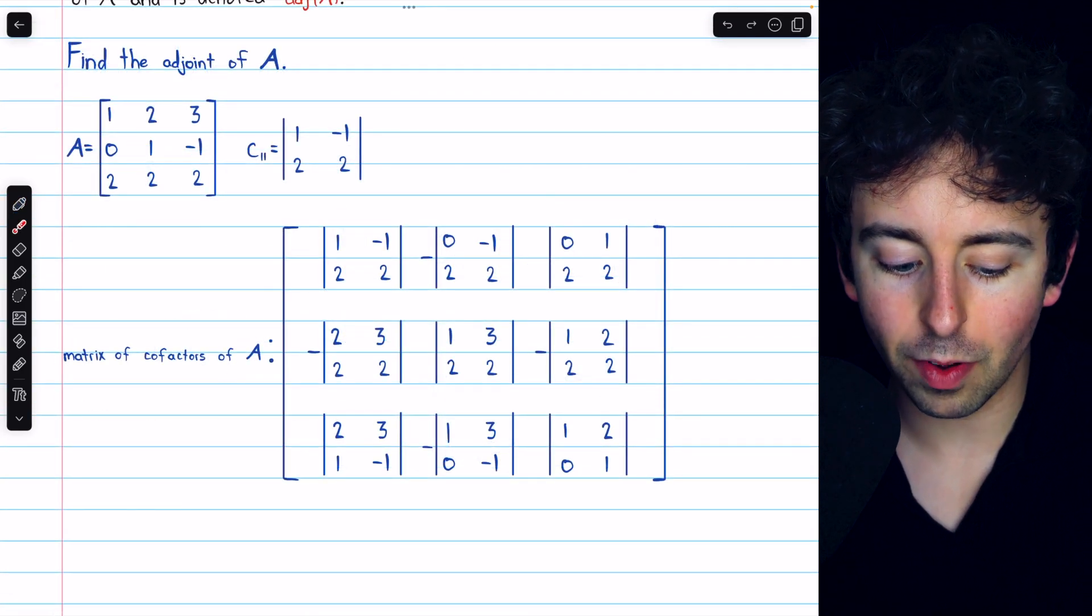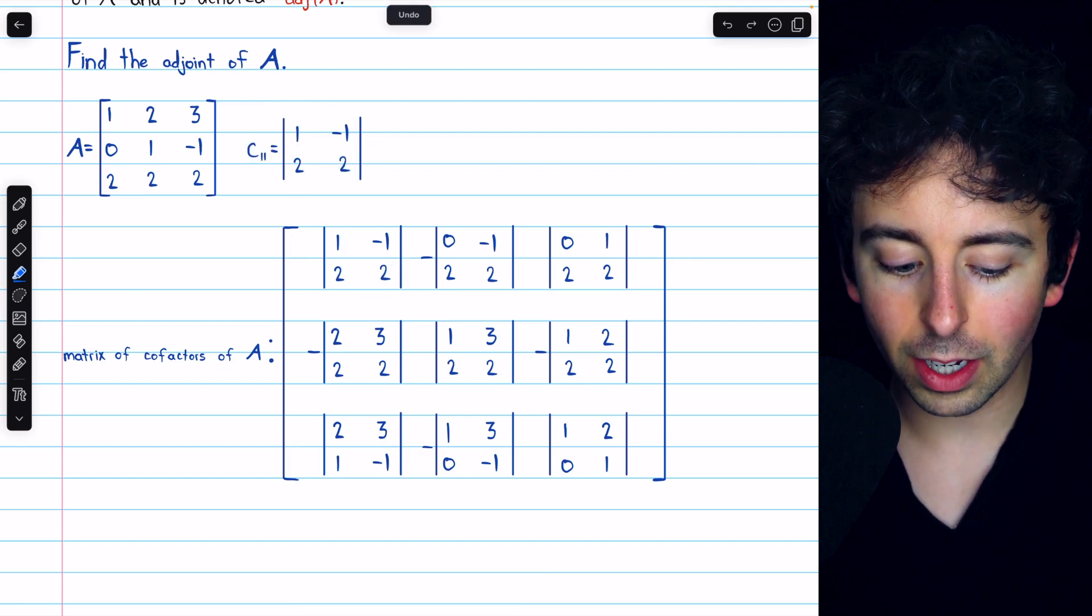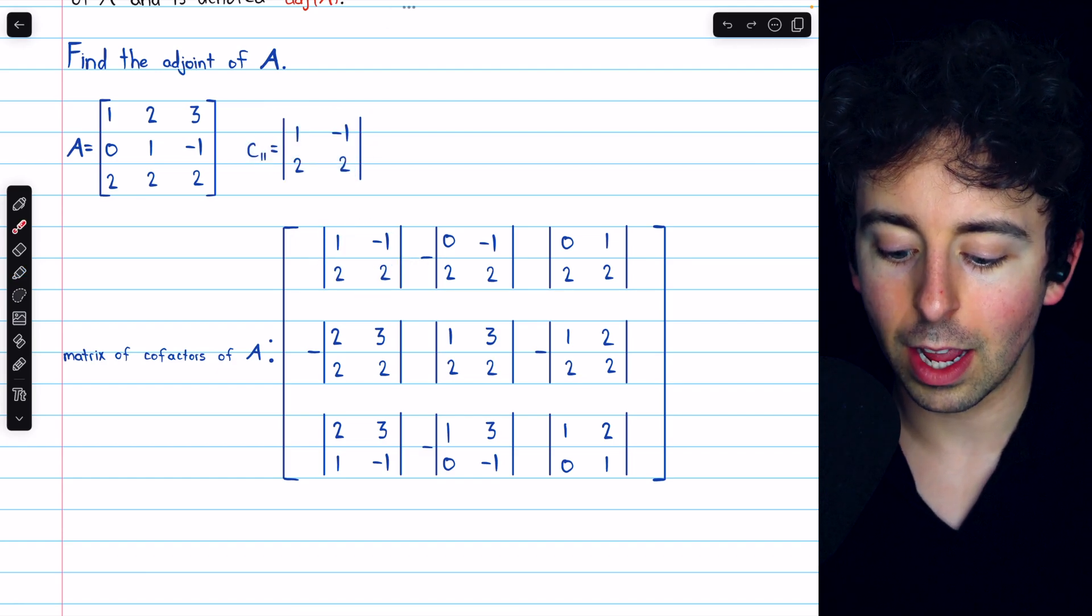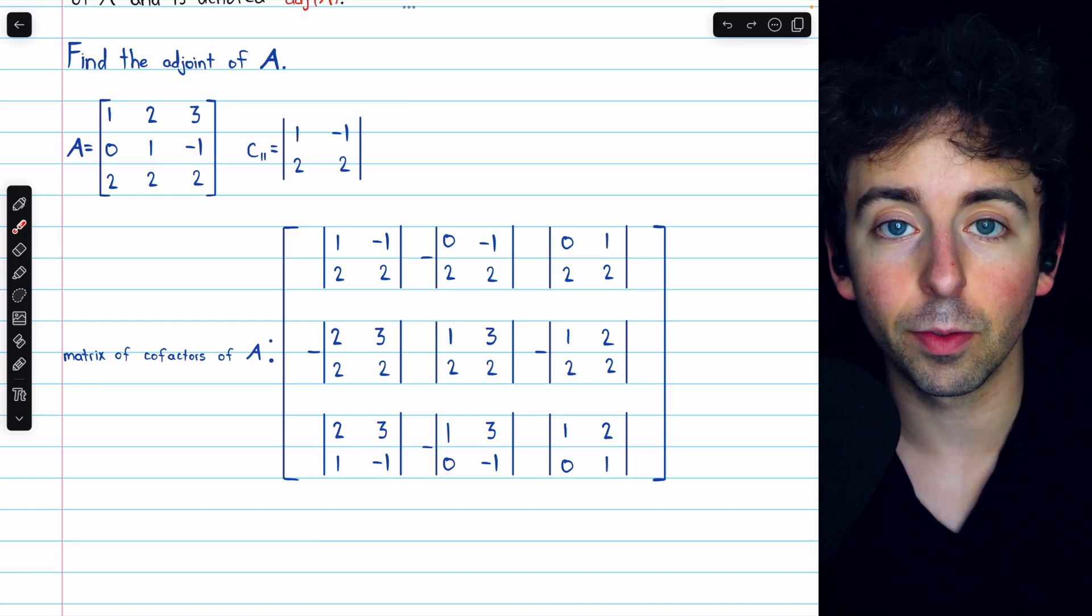Here is our matrix of cofactors. You can see our first cofactor there, and notice how the determinants alternate between having a negative in front and not having a negative in front.